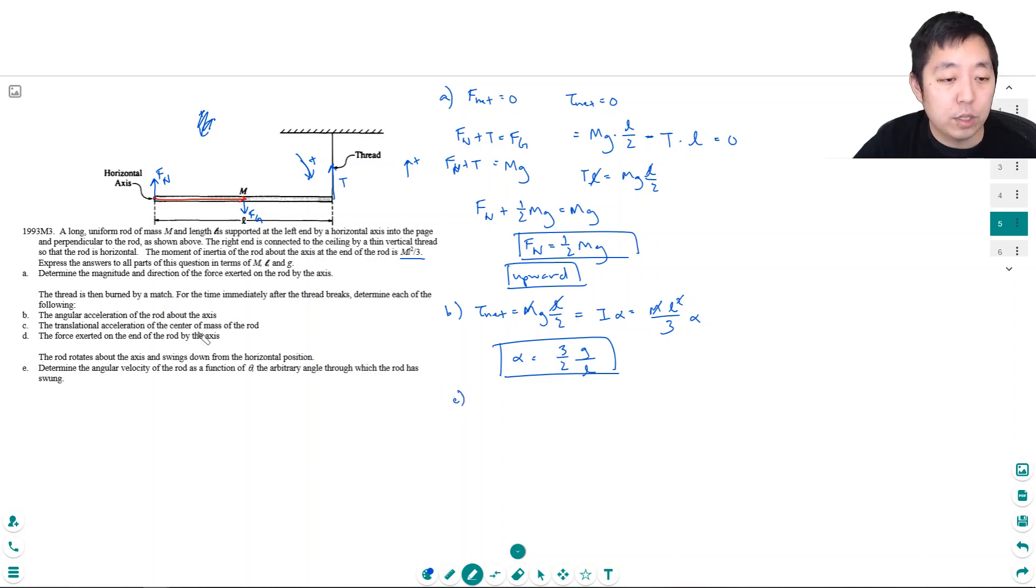Okay, the translational acceleration of the center of mass of the rod. So that means that's his linear acceleration right here. His linear acceleration is always alpha times r. The alpha we know is 3 halves g over l. The l is the distance, is the position. The linear acceleration is going to be faster here and here as it rotates, so they want it here, which is times l over 2, that's what r is, the distance from the point of rotation. So that's equal to 3 fourths g.